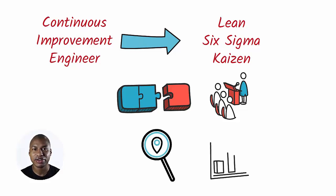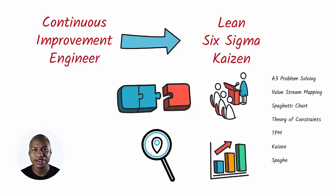You must have a strong motivation to bring tangible results through improvement activities. You must be experienced in using lean tools such as A3 Problem Solving, Value Stream Mapping, Spaghetti Chart, Theory of Constraints, TPM, Kaizen, etc. Green Belt and Black Belt certifications can be a plus.